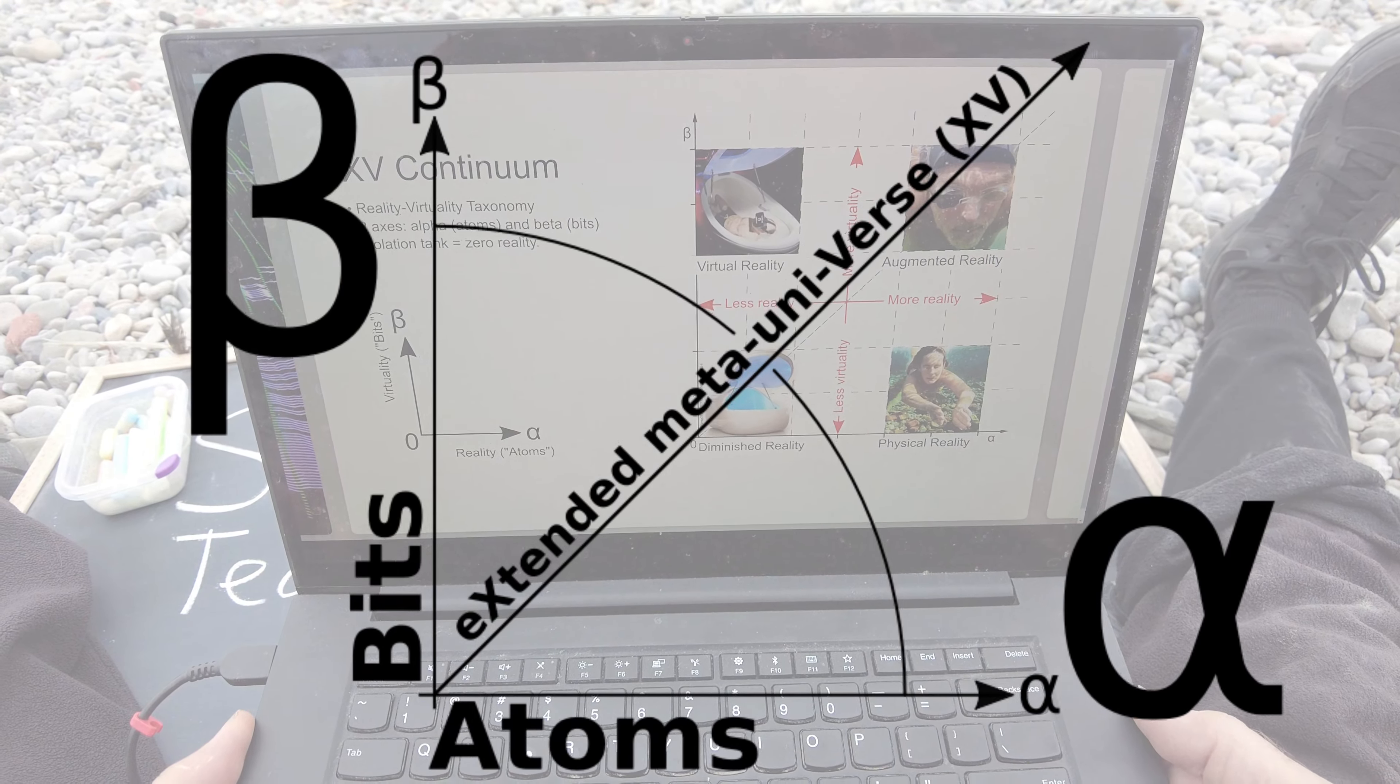Here we have a useful taxonomy because it divides the plane up into quadrants. In the lower left quadrant we have diminished reality and diminished virtuality. And here we have a float tank, a sensory isolation tank. In a float tank we have zero input from the real world and zero input from the virtual world.